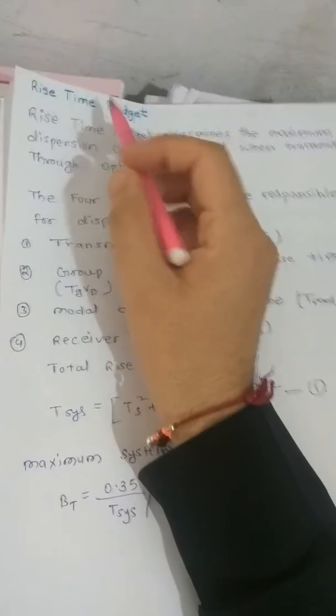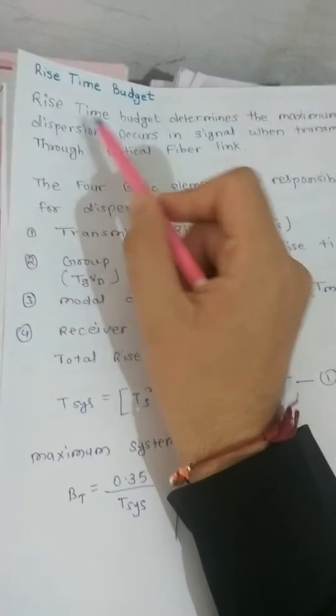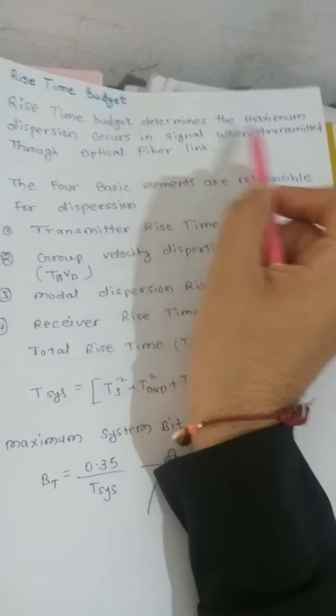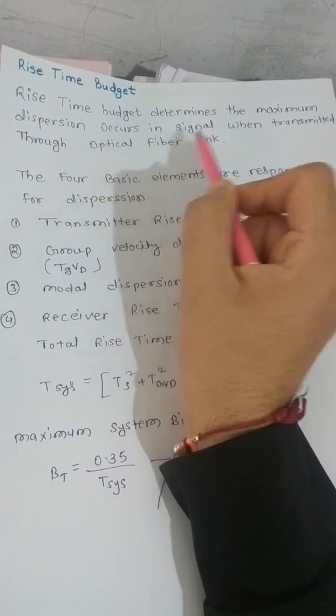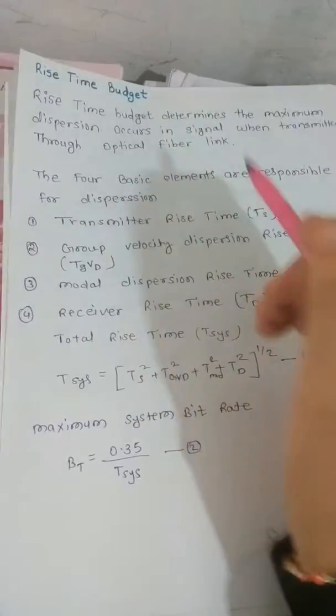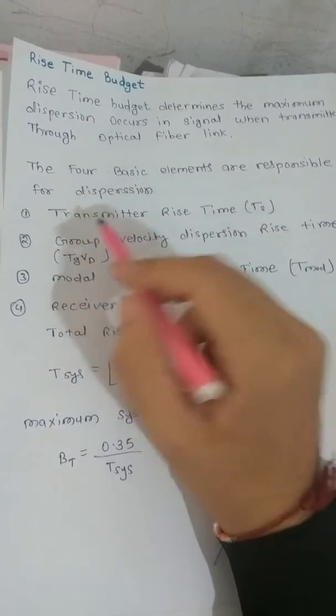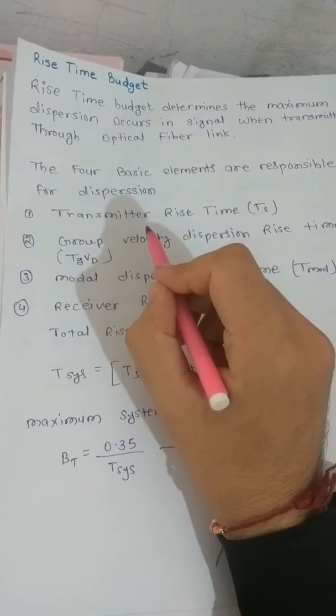So here is rise time budget. Rise time budget determines the maximum dispersion that occurs in a signal when transmitted through an optical fiber link. The four basic elements are responsible for dispersion. First, transmitter rise time Ts.